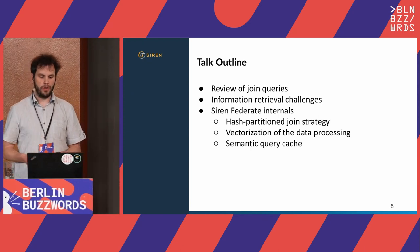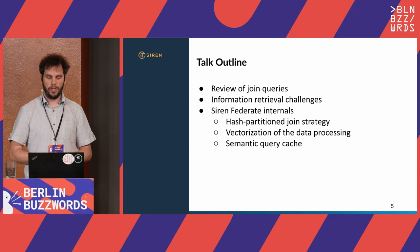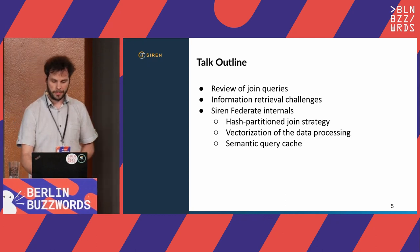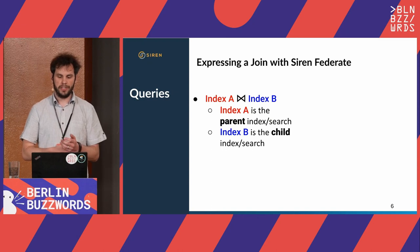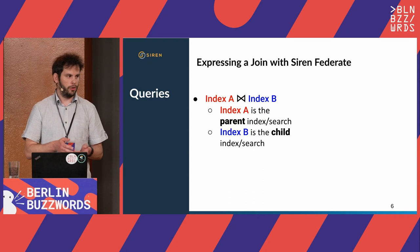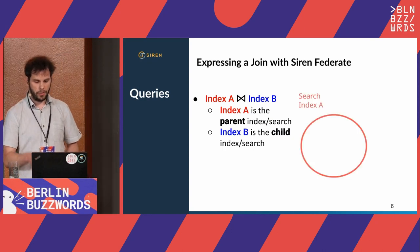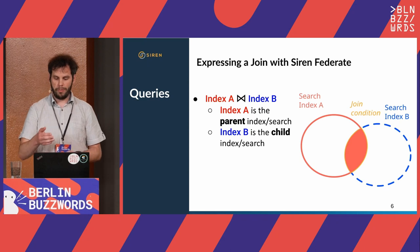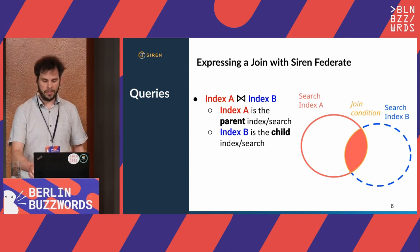In today's talk, I will present first some join queries, then some of the challenges in implementing relational capabilities over an information retrieval system, and finally different internal aspects of the SAR Infederate plugin. When you want to join two indices — index A with index B — index A is the parent index and index B is the child index. Using a Venn diagram: you define a search over the parent index, a search over the child index, and their intersection is defined by the join condition. The response will be the subset of documents from the parent index that fulfilled that condition.